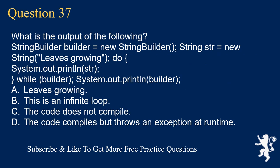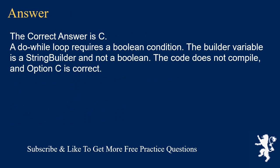Question 37. What is the output of the following? StringBuilder builder = new StringBuilder(); String str = new String("leaves growing"); do { System.out.println(str); } while (builder); System.out.println(builder); A. leaves growing. B. This is an infinite loop. C. The code does not compile. D. The code compiles but throws an exception at runtime. The correct answer is C. A do-while loop requires a boolean condition. The builder variable is a StringBuilder and not a boolean. The code does not compile, and option C is correct.